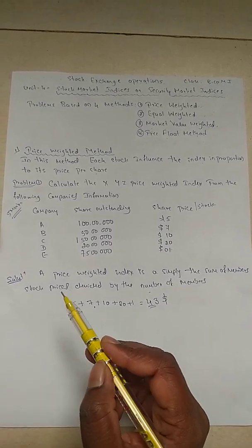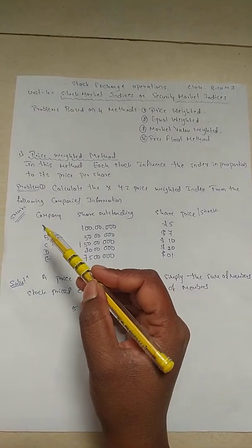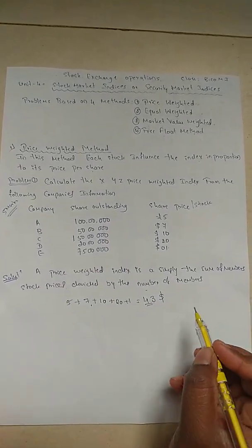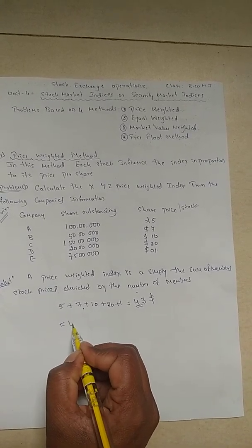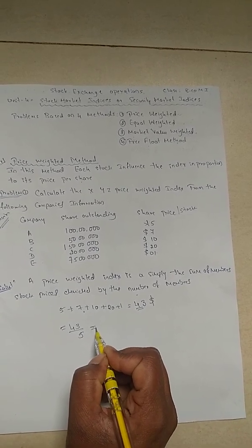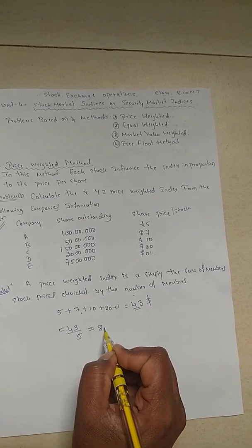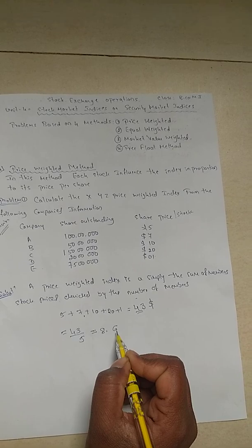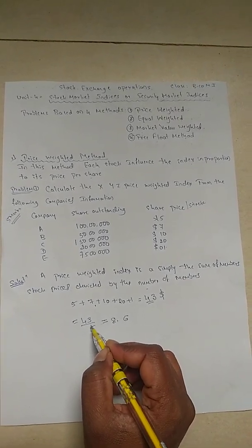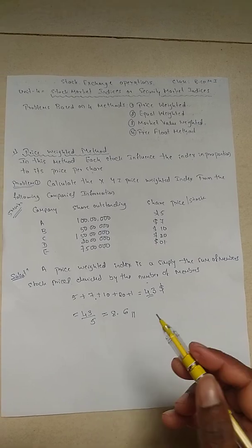So it is 43 dollars total. Next what we have to do? The stock price is divided by the number of members. Number of members means the number of companies: 1, 2, 3, 4, 5. So there are five members. Now 43 divided by 5, so if we do the calculation, it comes to 8.6 approximately.